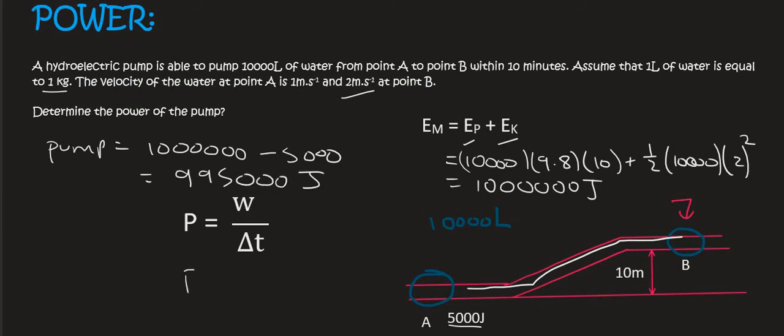So we can work out the power of the pump by taking the energy or the work due to the pump and dividing by the time, which is 10 minutes, which is the same as 600 seconds. And so the power output is 1658.33 watts.